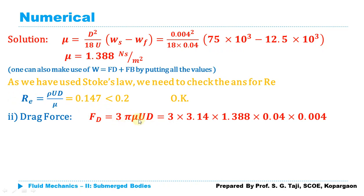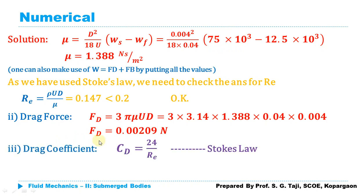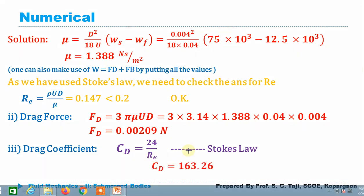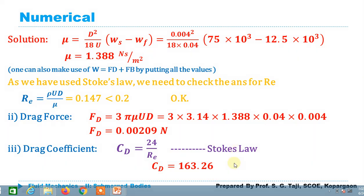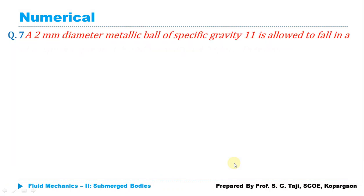Next, we calculate the drag force using Stokes law: FD = 3πμUd. Substituting all values, FD = 0.00209 N. Finally, the drag coefficient using CD = 24/Re: substituting Re = 0.147, CD comes out as 163.26, which is dimensionless.